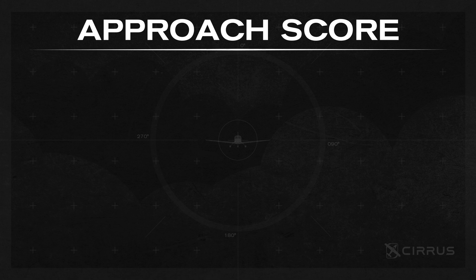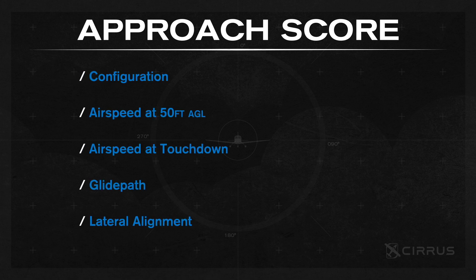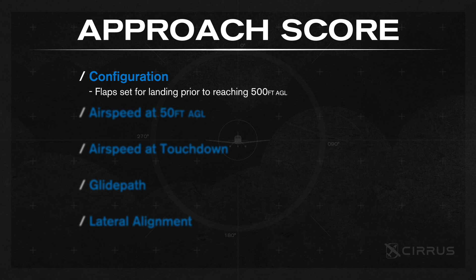Throughout your approach and landing, you'll be scored on these factors and their associated scoring weights. Configuration — meaning, have you properly configured your flaps prior to reaching 500 feet AGL? If you haven't, your approach will be considered, by default, as unstable.